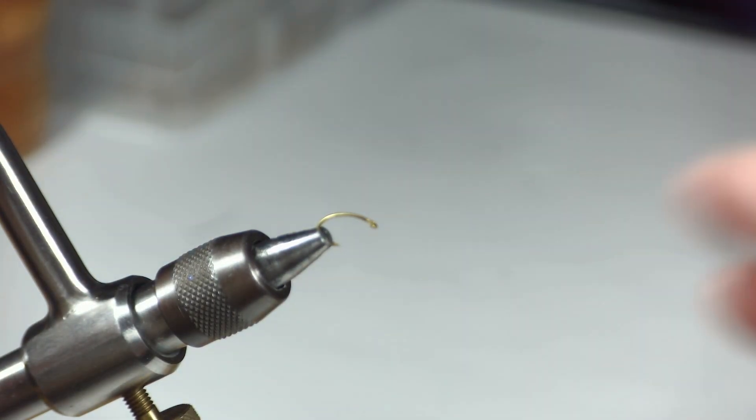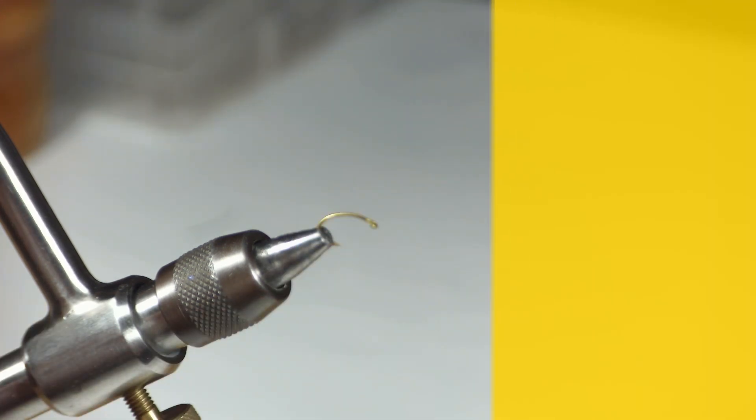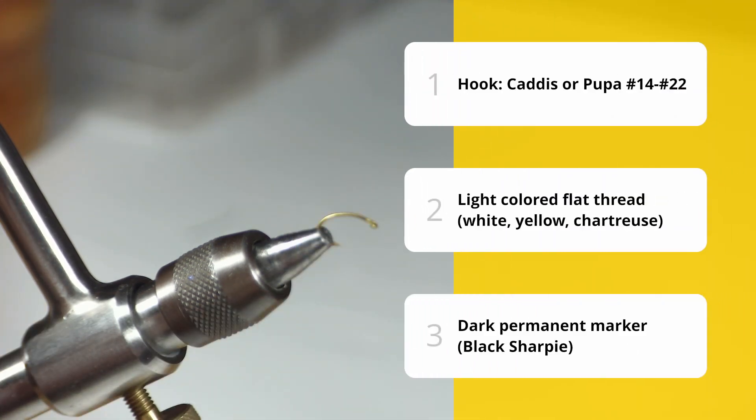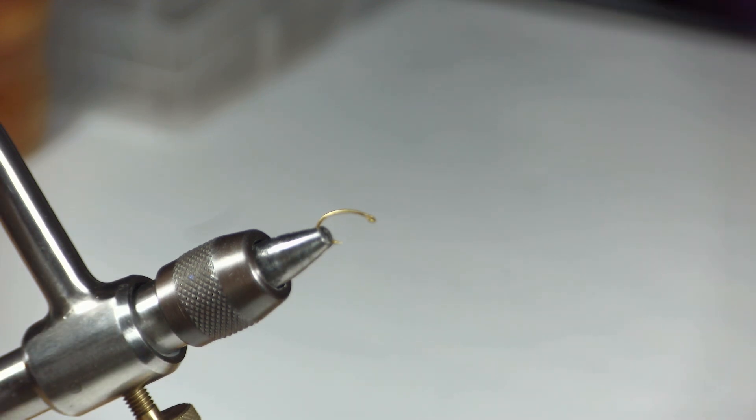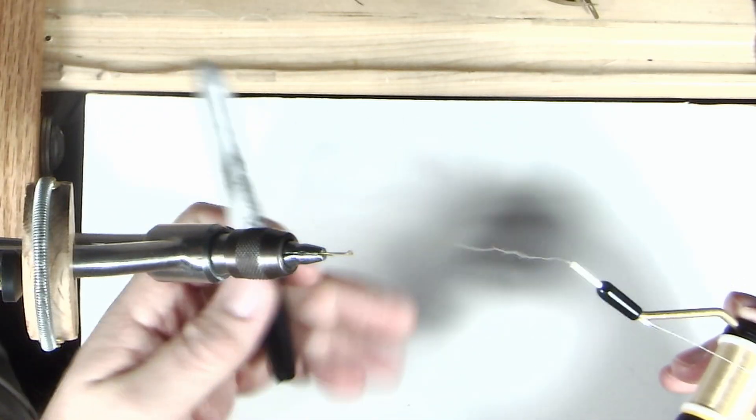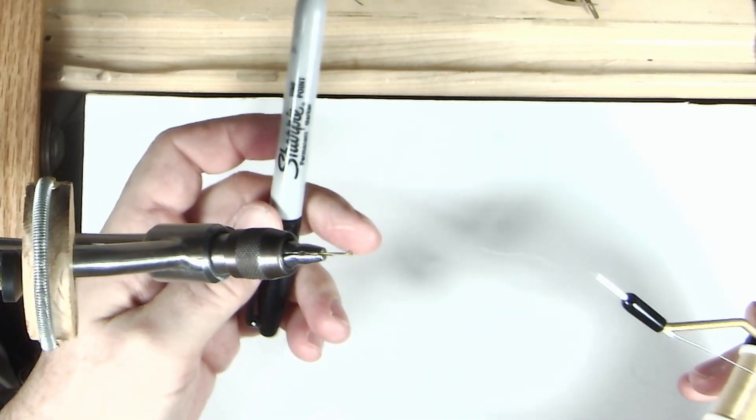For this particular tie, we need three things: a hook, some light colored thread - the color doesn't matter, it can be white or off-white. I'm going to use a cream colored thread, this is a 140 denier UTC Ultra Thread. The third thing you need is some sort of dark color waterproof or permanent marker. I'm going to use the Sharpie.